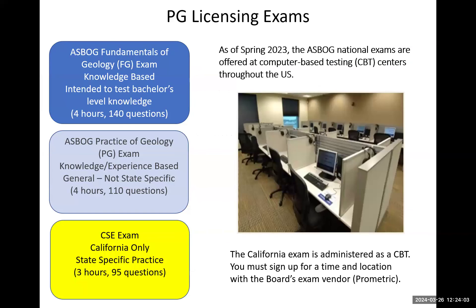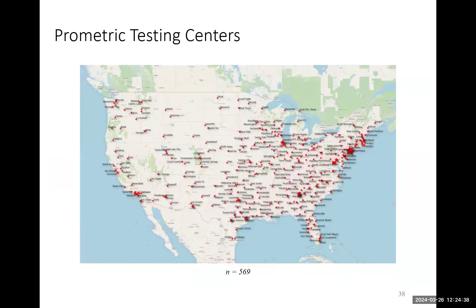Once your application is approved, you'll get emails saying you can sit for the exams. You schedule them through our Prometric vendor, and ASBOG has a similar but slightly different branch of Prometric. The Practice of Geology exam is 110 questions, and the California specific exam is 95 questions over three hours. Prometric is all over North America, so you can usually find something close to where you are. You no longer have to travel to Sacramento or Long Beach to take the exam, which is really nice. We've seen improvement in scores since computer-based testing became available.